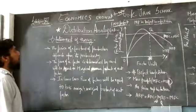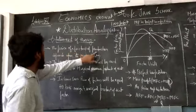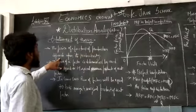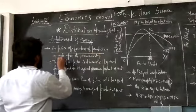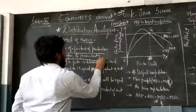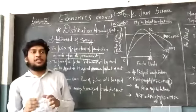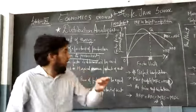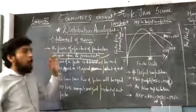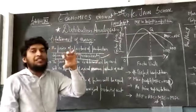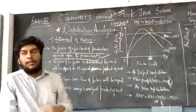See the Statement of Theory: the price of factors of production depends upon its productivity. Any factors of production — the price of that factor depends upon the productivity. How much the productivity of a factor is, that much the reward will be there.